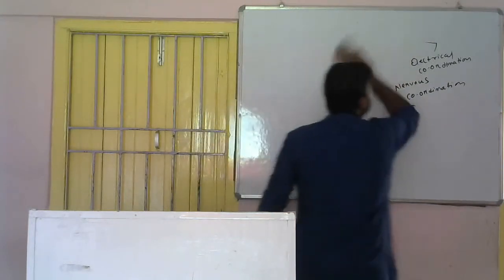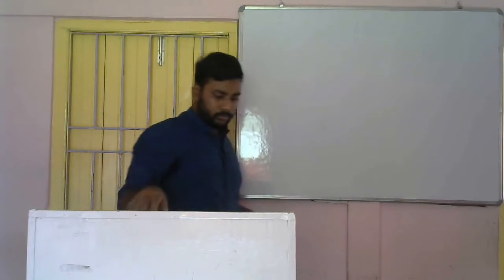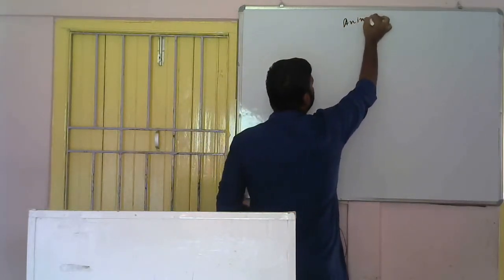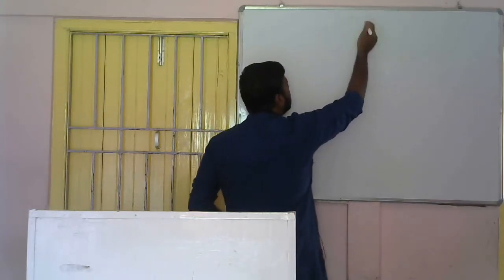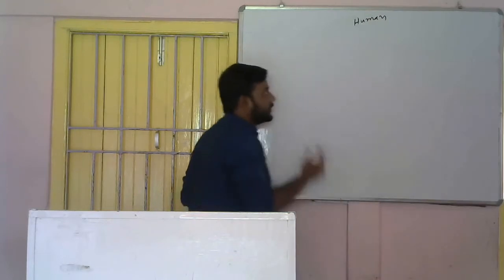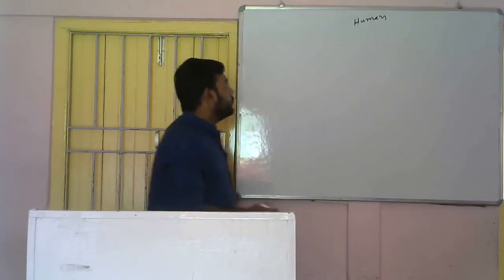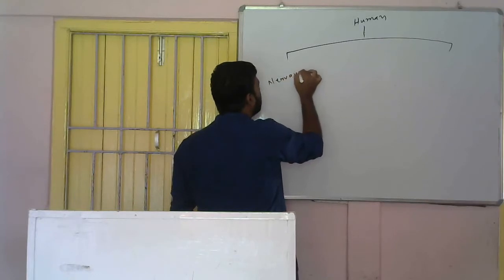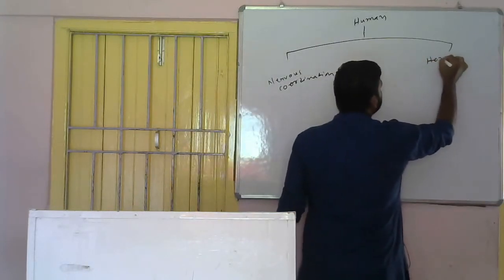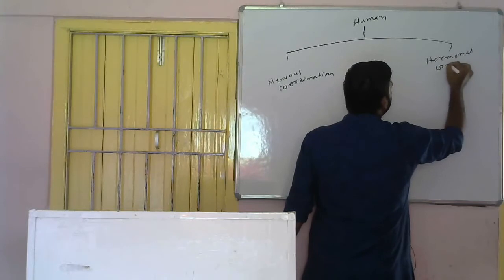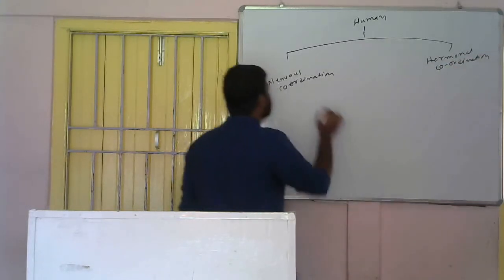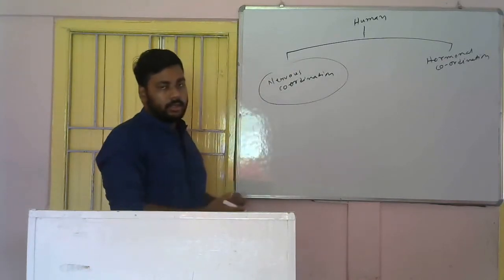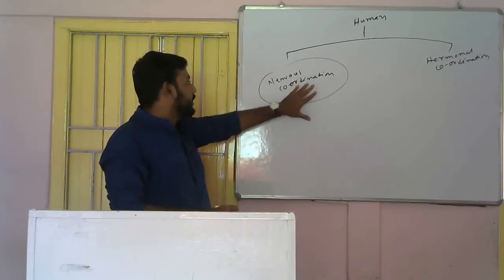First, let us discuss coordination in humans. As mentioned earlier, coordination in humans is of two types: nervous coordination and hormonal coordination. So first we will discuss nervous coordination. What is nervous coordination? Nervous coordination are those types of coordination that require the nervous system or the nerves. It is found in animals, and in this case, in humans. One advantage is that it is faster than hormonal coordination.